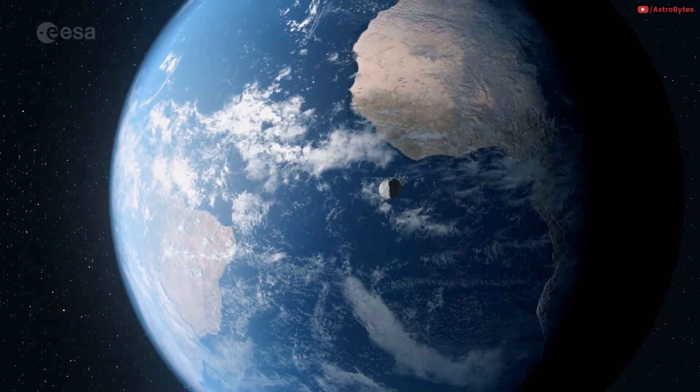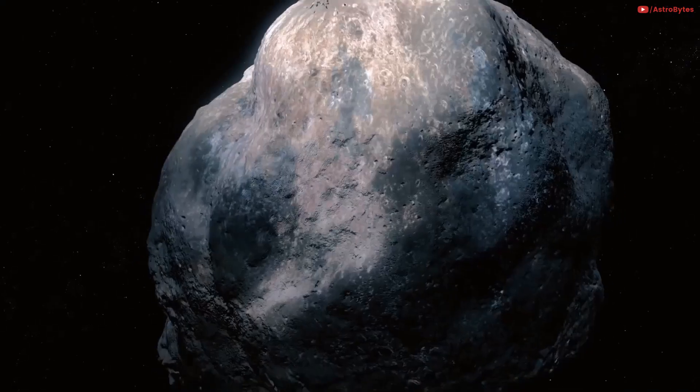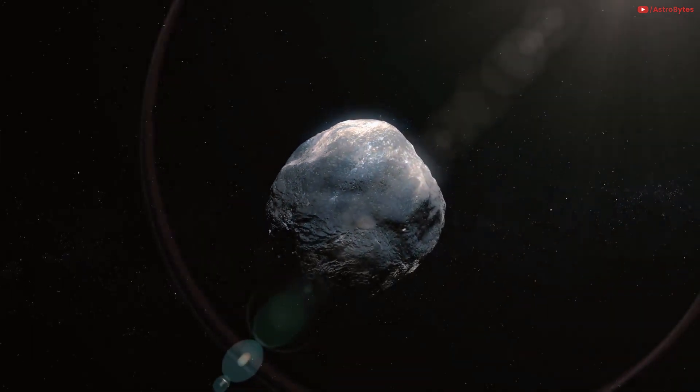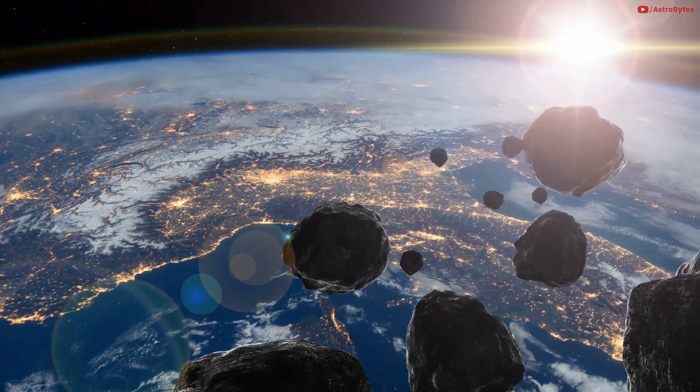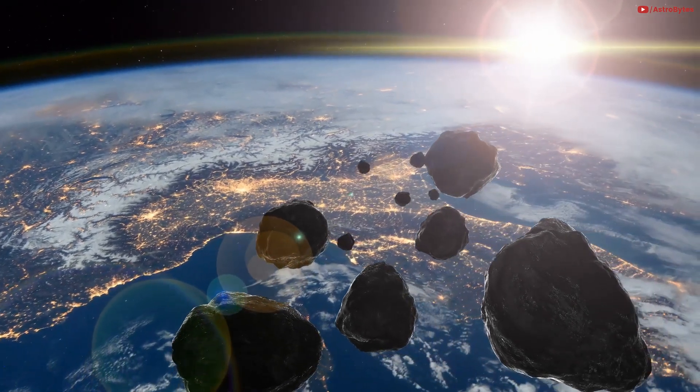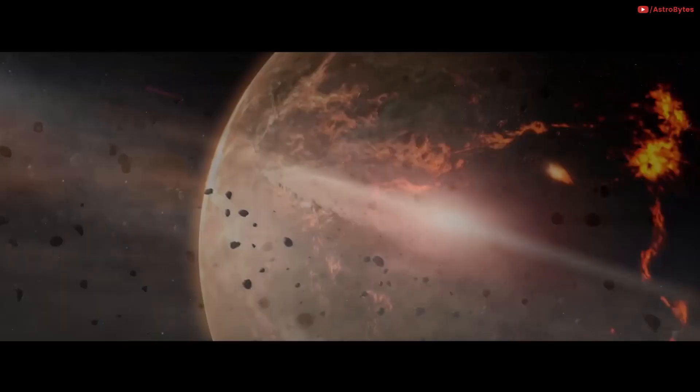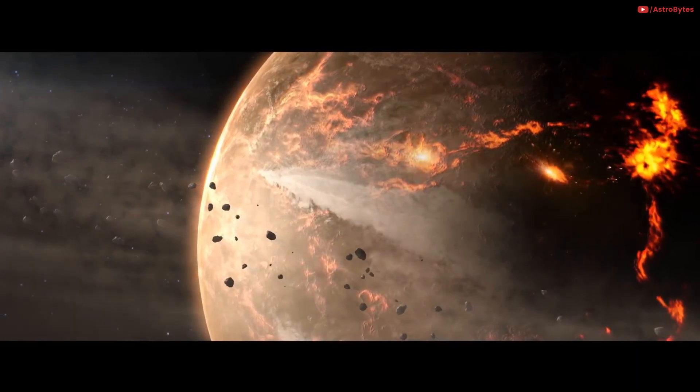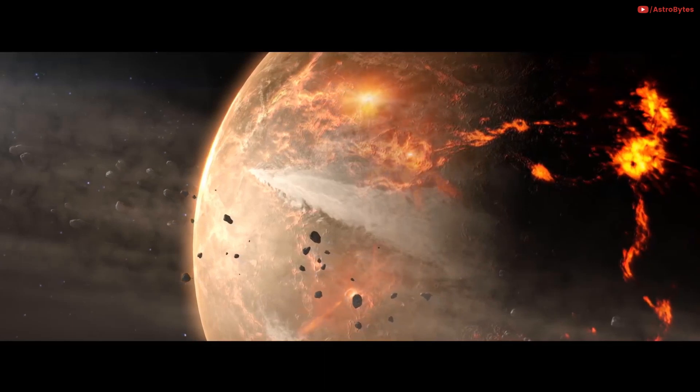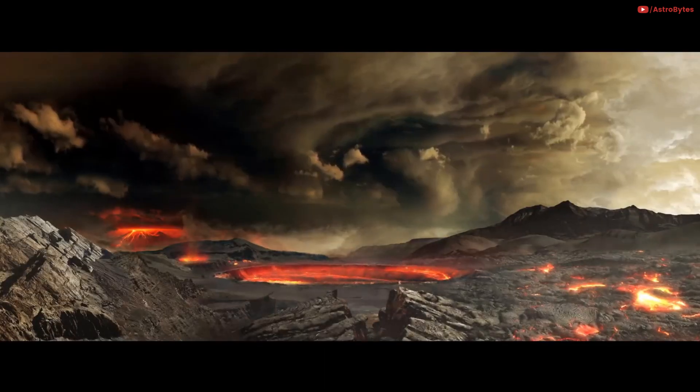Asteroids could bombard the planet. Rocks from space can be pretty destructive. A big one wiped out the dinosaurs, though it would take a lot of asteroids to properly dispatch the entire planet. Still, it could happen. Earth was heavily bombarded by asteroids for millions of years after it was formed. The impacts were so intense that the oceans boiled for a full year.